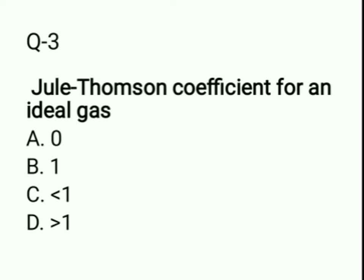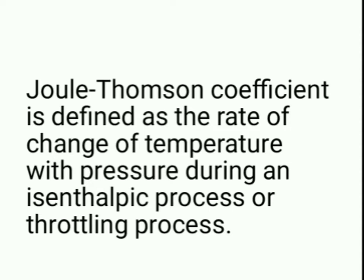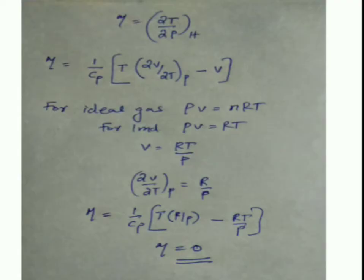The Joule-Thomson coefficient is defined as the rate of change of temperature with pressure during an isenthalpic process, also called a throttling process — a constant enthalpy process. The Joule-Thomson coefficient μ is defined accordingly.